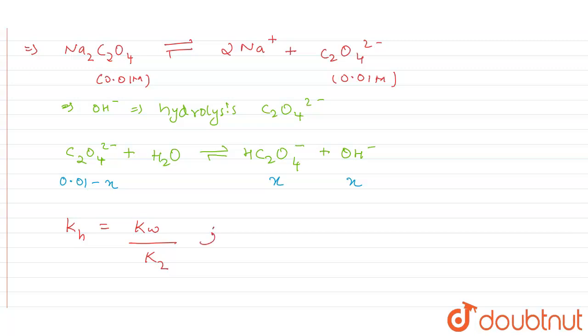In the next step we can find out the Kh, hydrolysis constant, by equating it: we will have concentration of HC₂O₄⁻ multiplied by concentration of OH⁻, this whole divided by concentration of C₂O₄²⁻.